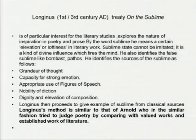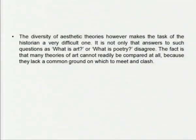Horace compares the poem as a painting to the auditory senses, maintaining that poets — especially in his Ars Poetica — should always keep in mind the audience, joining the instructive with the agreeable, that which is pleasing. In his Ars Poetica, he gives instruction to a budding poet on how a poem should be; thus Horace's work is more of a treatise than literary criticism. We come to Longinus and his treatise On the Sublime, probably from the 1st to 3rd century AD. Longinus is of particular interest for literary studies because he explores the nature of inspiration in poetry and prose. By 'sublime' he means a certain elevation or loftiness in literary work — a grandeur that cannot be imitated, a kind of divine influence.